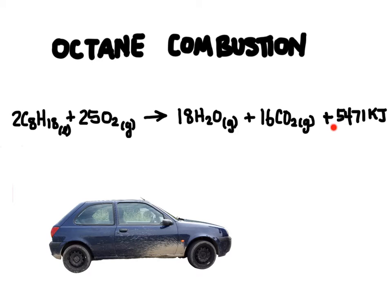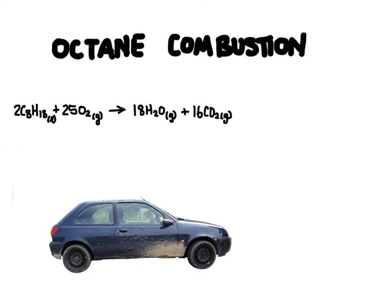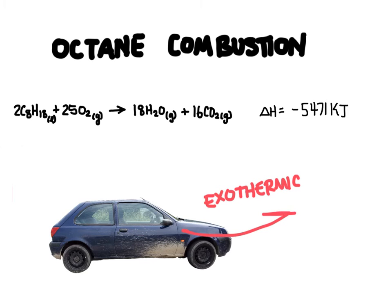We normally don't write the heat right into the chemical reaction. Instead we show how the enthalpy of the system changed. At the end of the chemical equation we put the symbol delta H, which means change in enthalpy, and then write how it changed. The enthalpy decreased by 5,471 kilojoules, so we write negative 5,471 kilojoules. We say negative because the total enthalpy decreased and energy was given off. Whenever you see a negative delta H, think exothermic reaction — meaning heat comes out of the system into the surroundings.